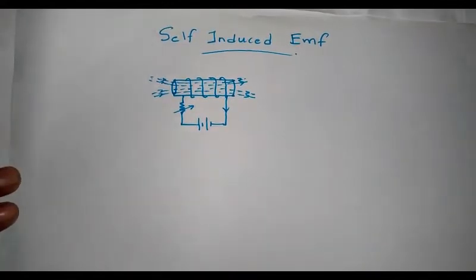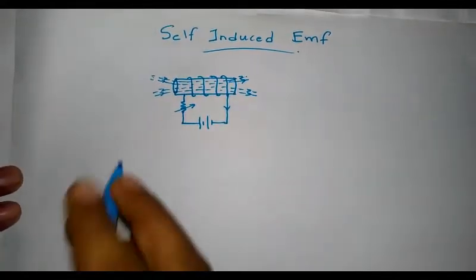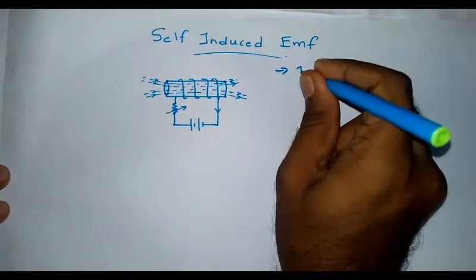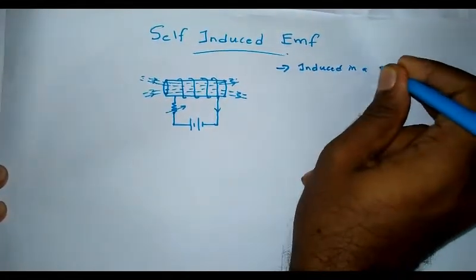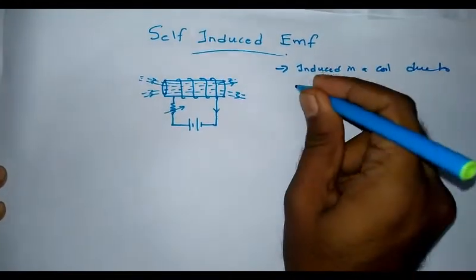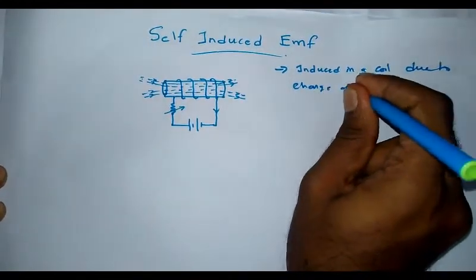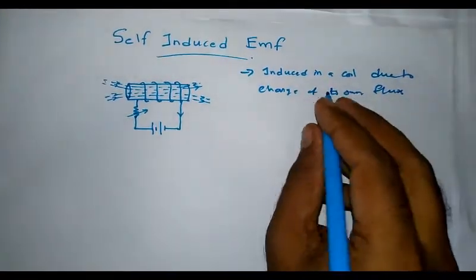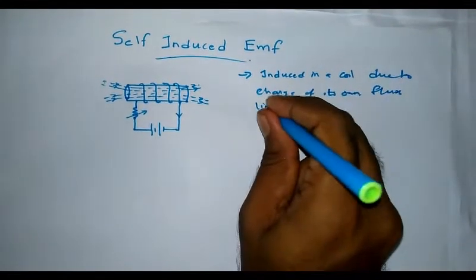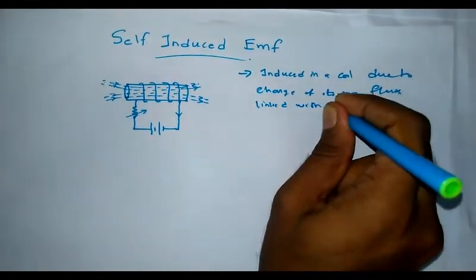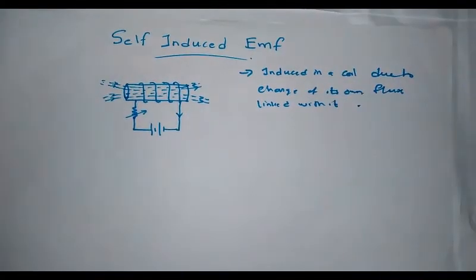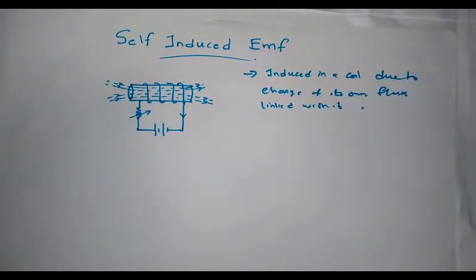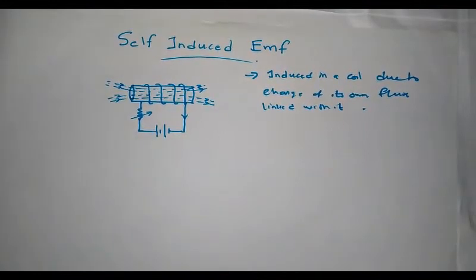Self-induced EMF is induced in a coil due to the change of its own flux linked with it. That is, self-induced EMF is caused in a conductor due to the change of its own flux linking with the coil.